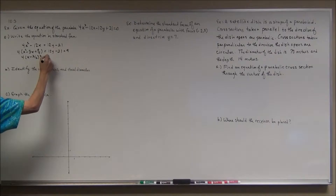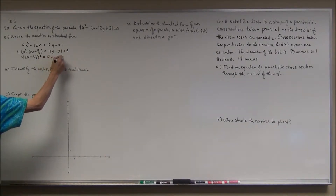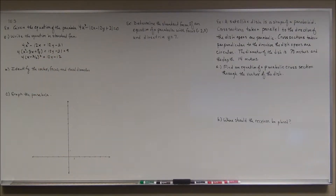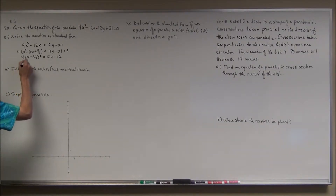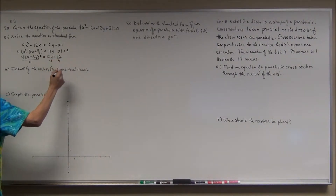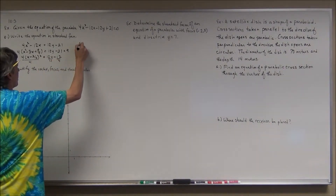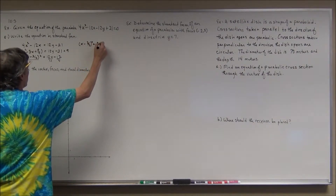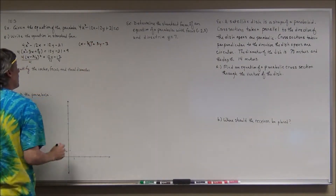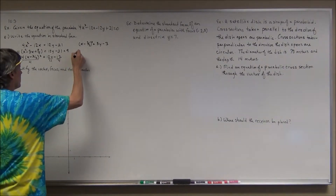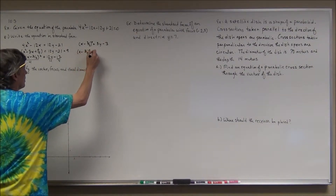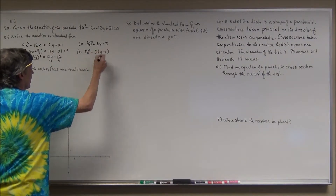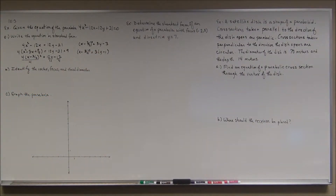This doesn't look like standard form yet because of the 4 out front, so I divide both sides by 4 to get (x minus three-halves)² equals 3y minus 3. Factoring out the 3 on the right gives me the equation in standard form. This parabola is going to open upward.